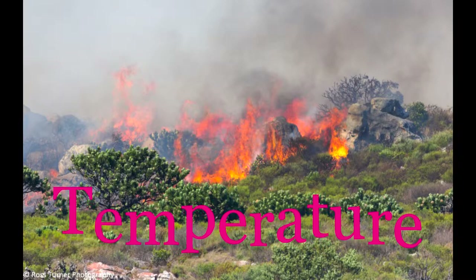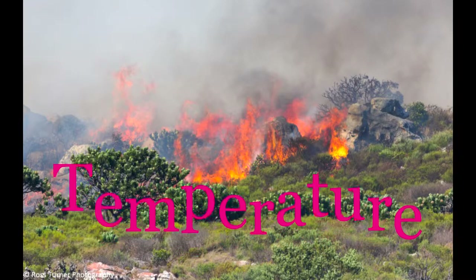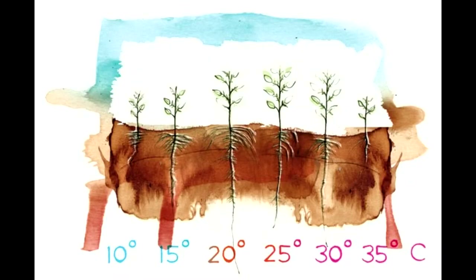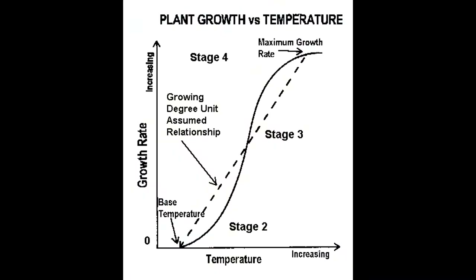Temperature. Some plants are dependent on temperature for germination. Photosynthesis also increases as temperature increases. However, if temperature gets too high or too low, plants' natural nutrient cycles become out of balance, and at extreme temperatures, plants can die.